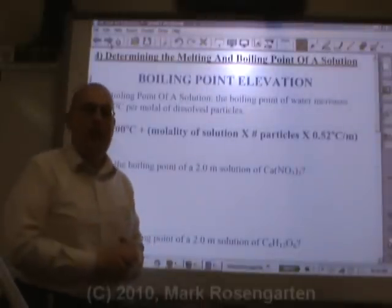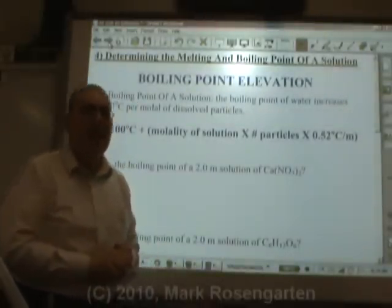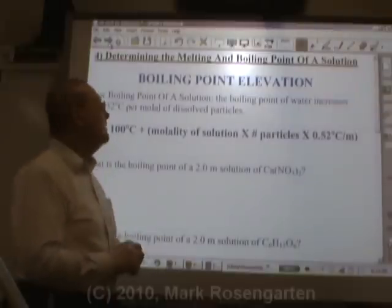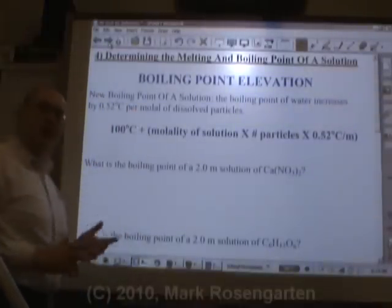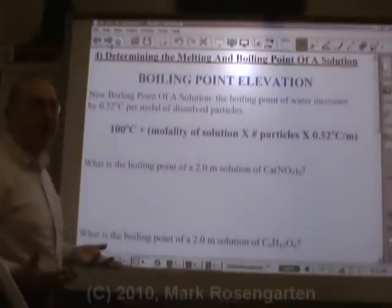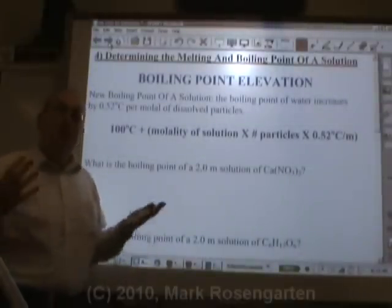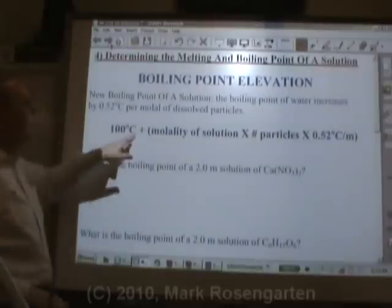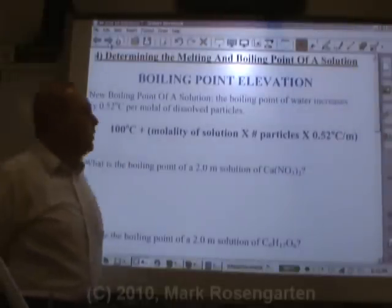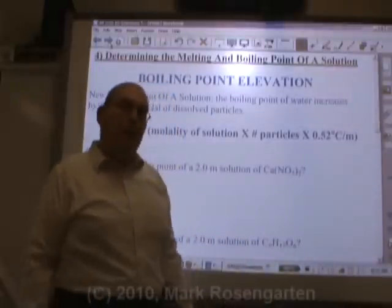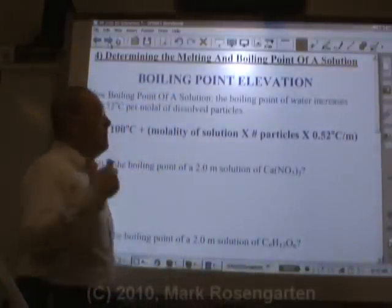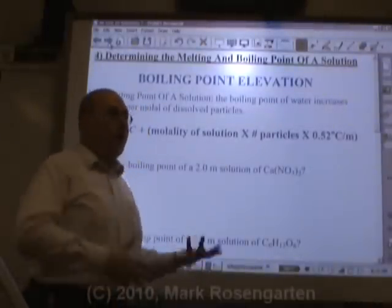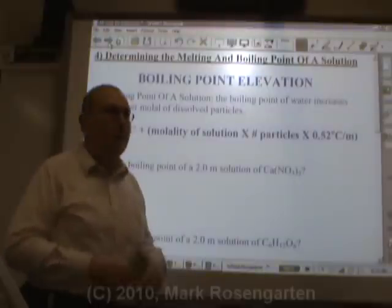Now we want to find out what the new boiling point or new freezing point of a solution is based on its concentration and how many particles it breaks up into when you dissolve it. To find the boiling point elevation, water boils normally at 100 degrees Celsius — assuming we're at sea level, normal atmospheric pressure. The boiling point is going to go up by a factor of 0.52 degrees Celsius per molal of dissolved particles. Some solutes break up into ions when you dissolve them — electrolytes — and some compounds don't break up into ions — non-electrolytes.